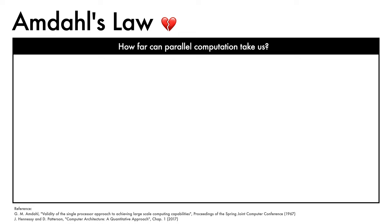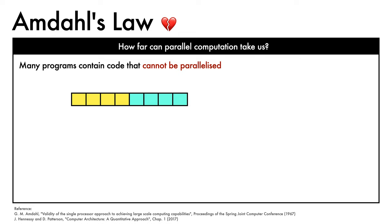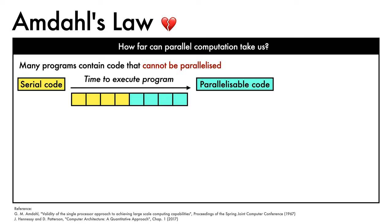But does this solve all of our issues and keep the performance scaling gravy train in motion? It looks like we are off to the races with multi-core processors, but now we run into a new issue, widely known as Amdahl's law — sometimes referred to by computer architects such as Hennessy and Patterson as Amdahl's heartbreaking law. This law tells us how far we can get with parallel computation. The starting point is to note that many programs contain code that cannot be parallelized.